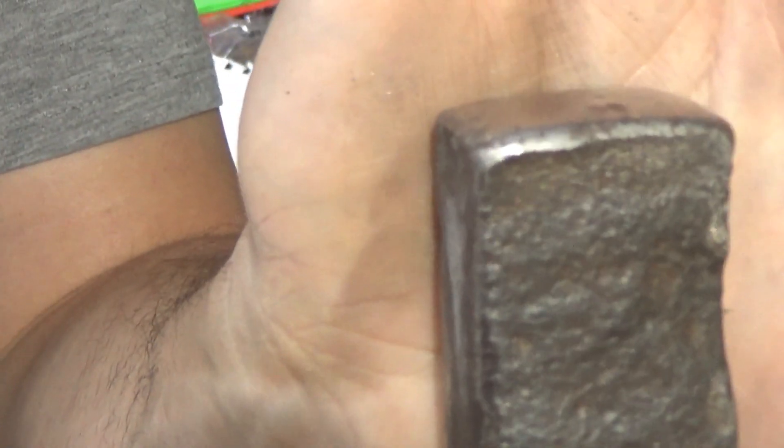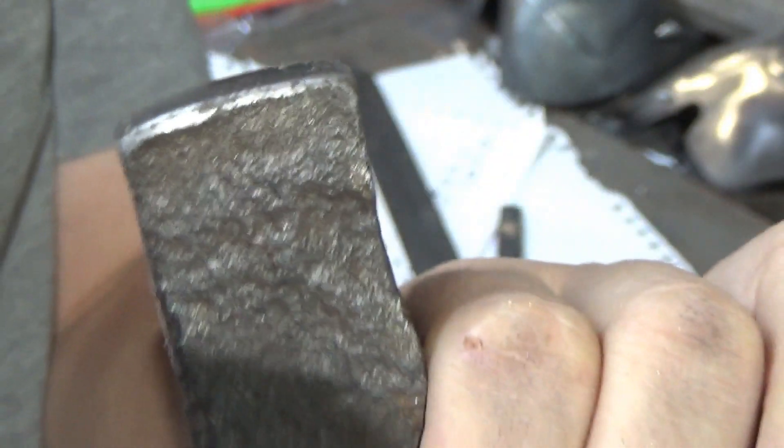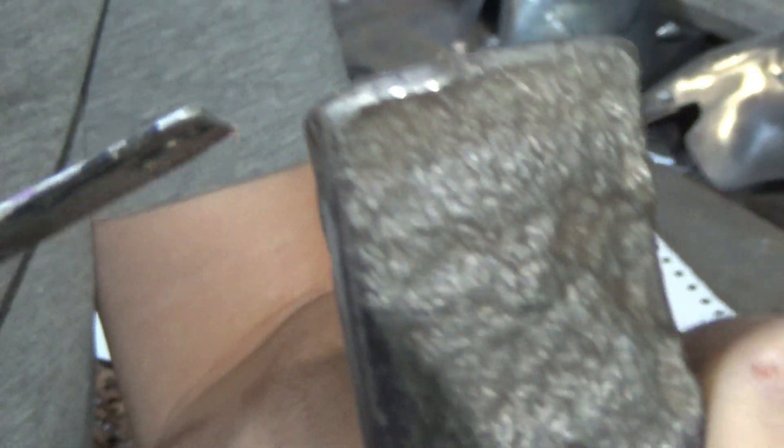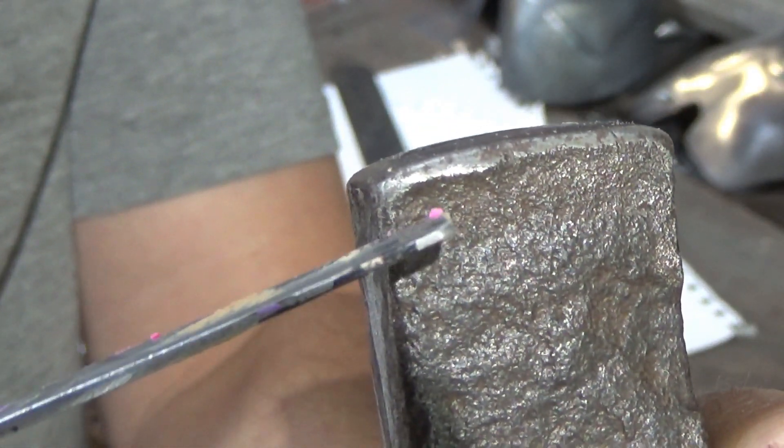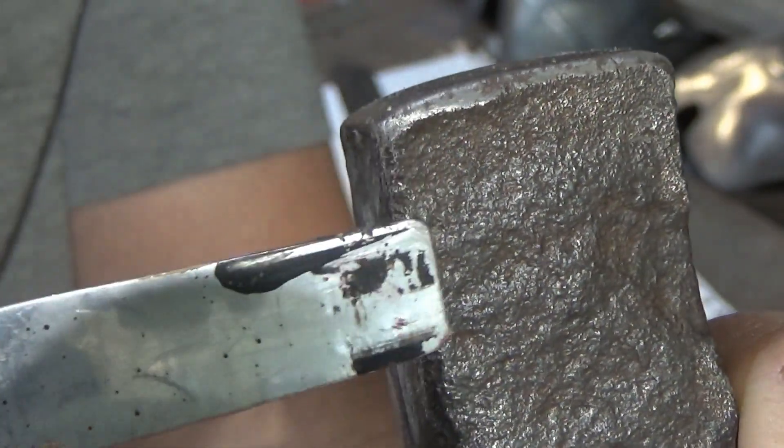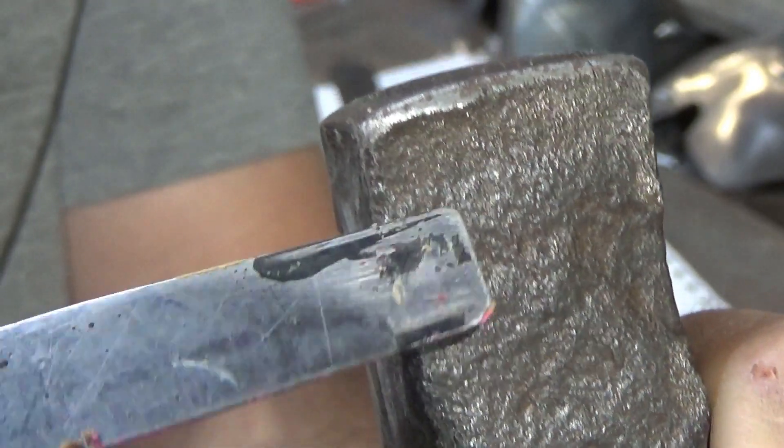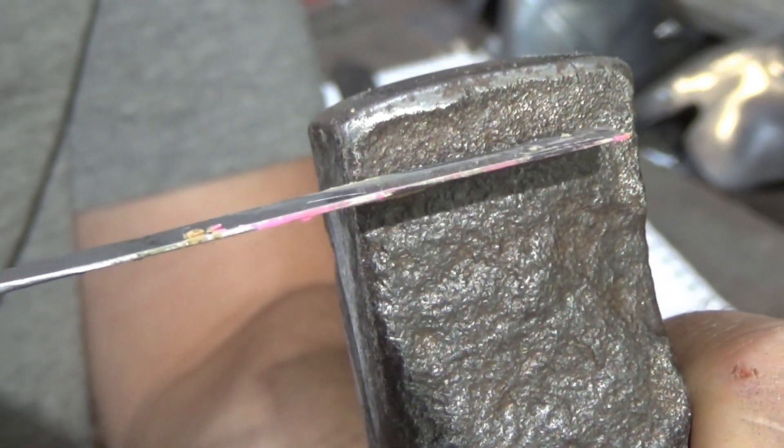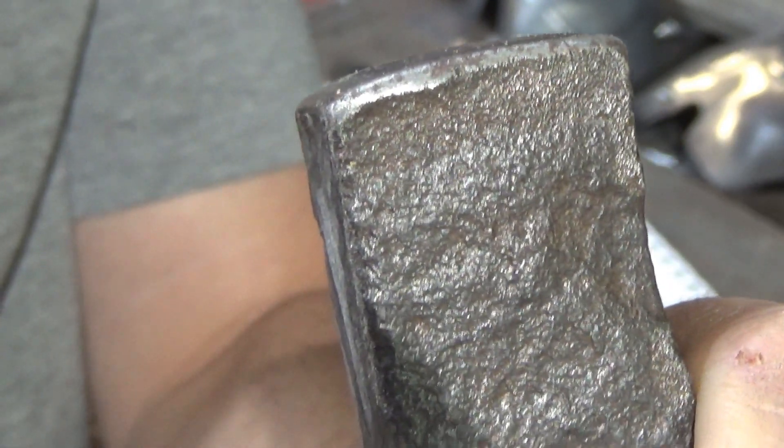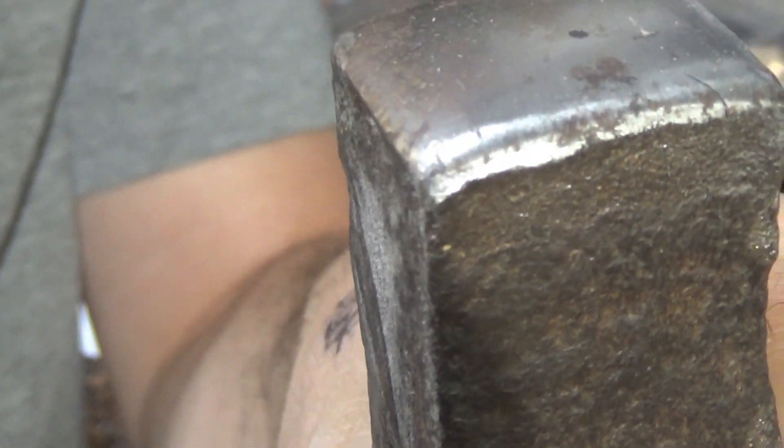If I bring that up to the light you can see two different types of material are in this. You've got the hardened bit here goes about that far down into the hammer and then the normal iron here. You can see there's a definite line there.